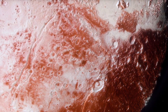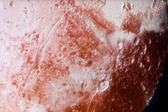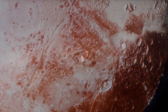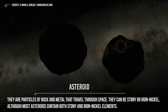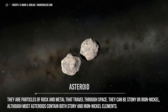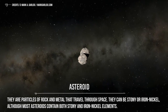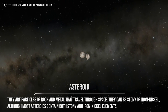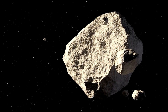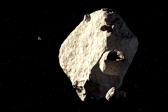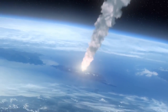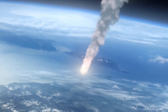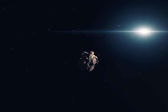The most famous example of a dwarf planet is Pluto, which was once considered to be a planet but was redefined. The definition of an asteroid is quite different. They are particles of rock and metal that travel through space. Asteroids can be stony or iron-nickel, although most asteroids contain both stony and iron-nickel elements. They can both orbit a planet or travel through the solar system, usually in highly eccentric orbits. If an asteroid enters the atmosphere of Earth, Mars, Jupiter, or any other planet, it is called a meteorite. Unlike dwarf planets, asteroids are often irregular in shape because they are too small to have a spherical shape.